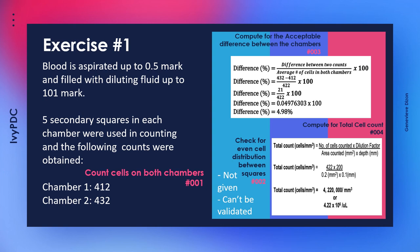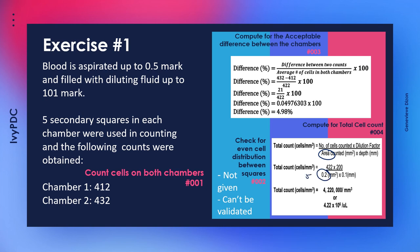For the total cell count formula: the cells counted is the average from the two chambers; the dilution factor is 200 (100 divided by 0.5, since the bulb contains 100 units and blood was drawn to 0.5); the area is 0.2 mm² for five secondary squares; and the depth is a constant of 0.1 mm. Continuing with the formula gives an answer of 4,220,000 per cubic millimeter, or 4.22 × 10⁶ per microliter.